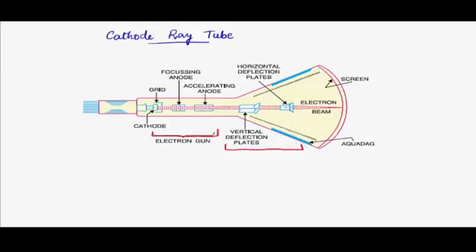Then we have what are known as deflecting plates. This segment of the cathode ray tube is for the purpose of deflection — there is a vertical deflection plate and a horizontal deflection plate. And finally at the end, we have the fluorescent screen where the image is actually formed.